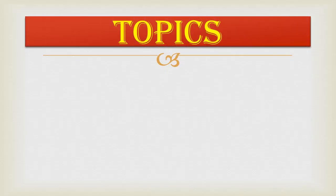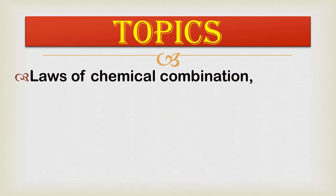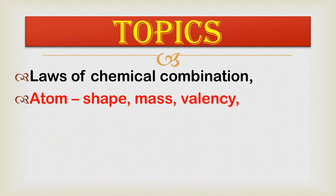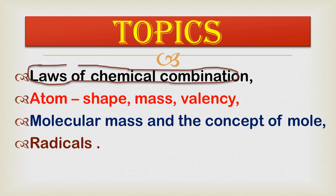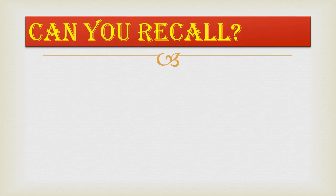The topics we have to study in this lesson are: first, laws of chemical combination — there are two laws we will study. Second is the atom, in which we will study the shape, mass, and valency of an atom. Third is molecular mass and the concept of mole. Fourth is radical. Today we shall learn only the laws of chemical combination.